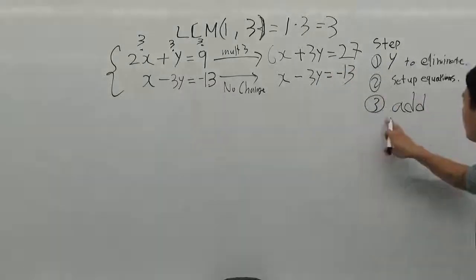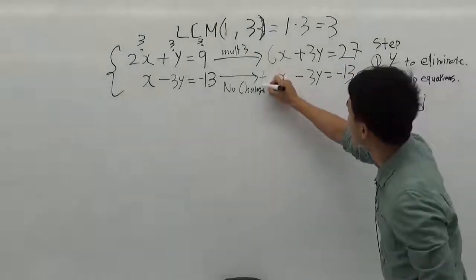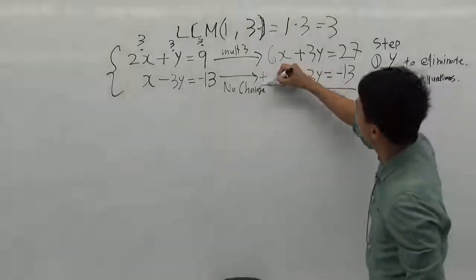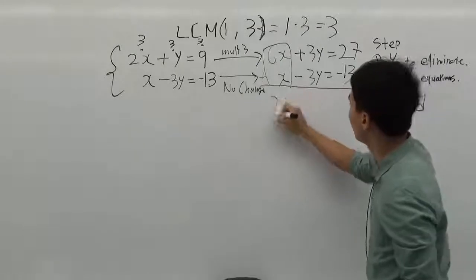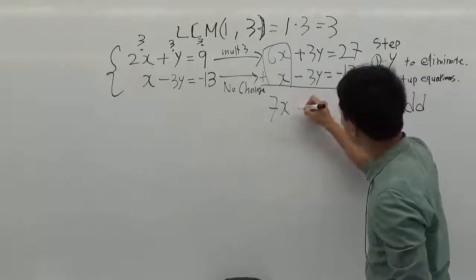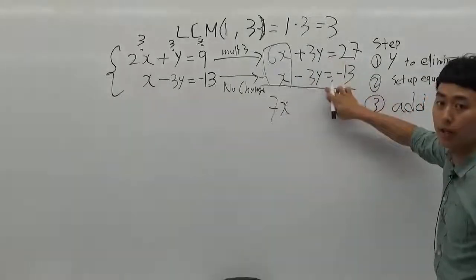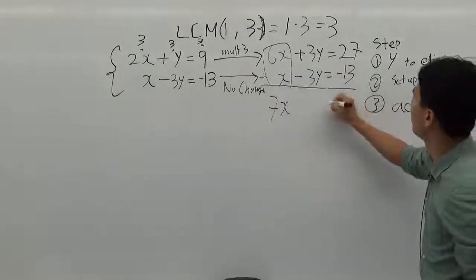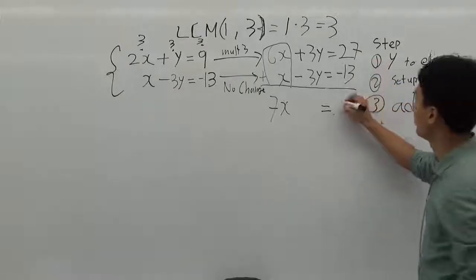The third step, we have to add the two numbers to eliminate the y. So I will add two numbers. 6x plus x is 7x. And 3y plus negative 3y, they are the same, so they just cancel. 27 plus negative 13 will be 14.